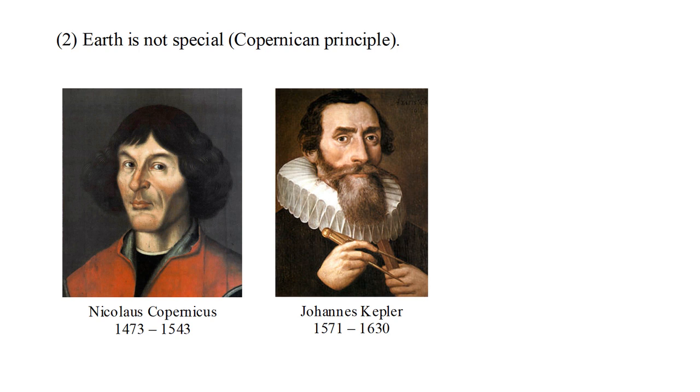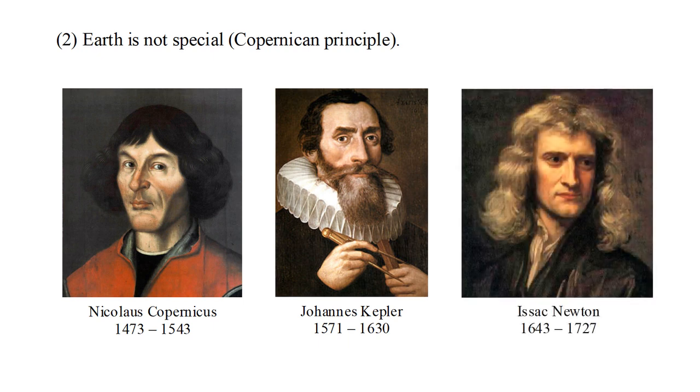Copernicus assumed all orbits are circular. Later, Kepler demonstrated that orbits are actually elliptical. Later still, Newton developed his laws of motion and gravitation, which explained elliptical orbits from fundamental universal principles. This made it possible, in theory, to describe the motion of all objects in the universe, and therefore, to develop a rigorous theory of cosmology.